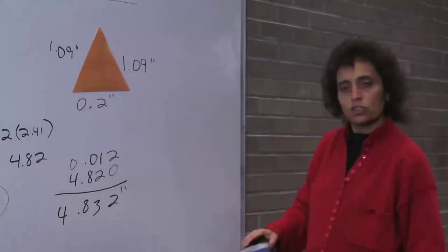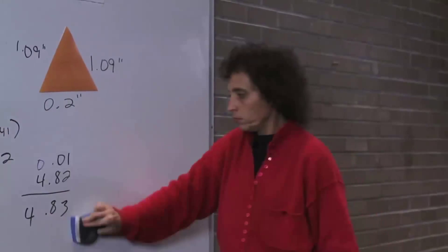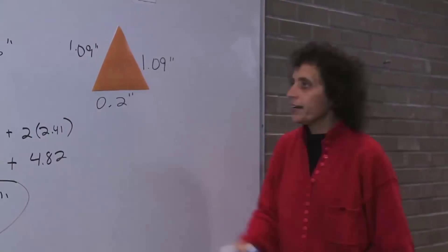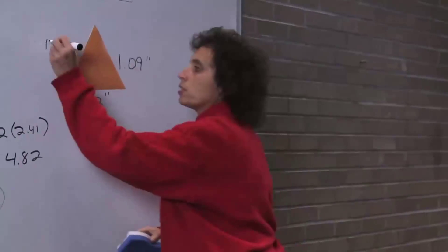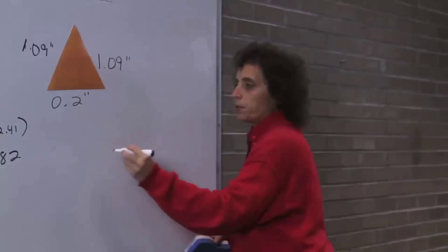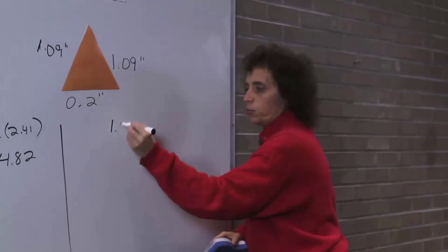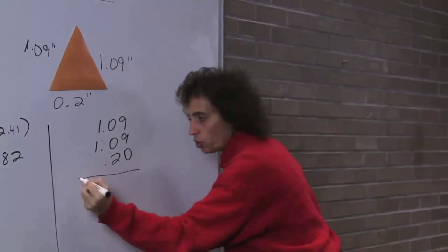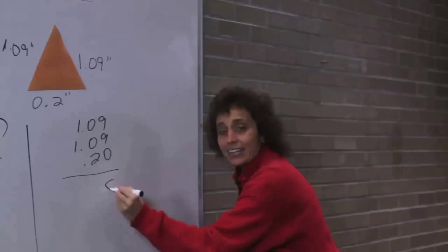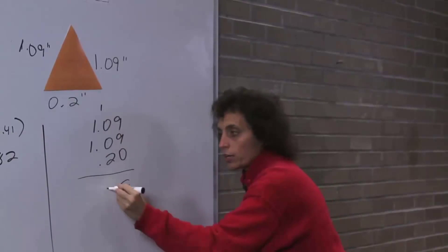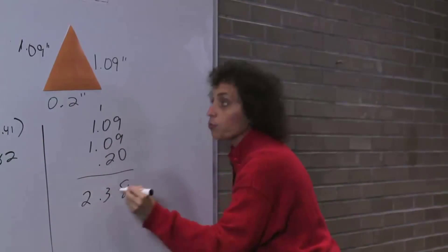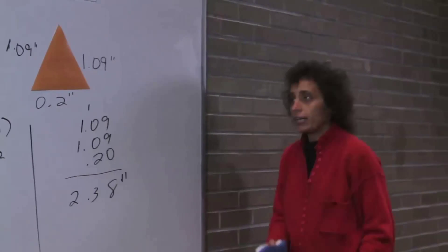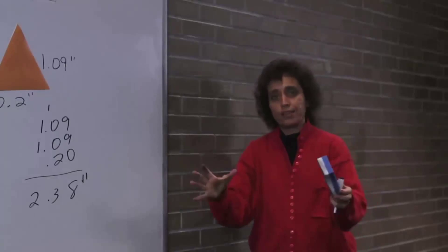Now take a look at this triangle. For the triangle, I have to add up all the sides. So this is easy enough just to line up and add: 1.09, plus 1.09, plus 0.2. I'll put a little placeholder. 9 plus 9 is 18, carry a 1 — you get 2.38 inches. And that's perimeter — distance around the figure.